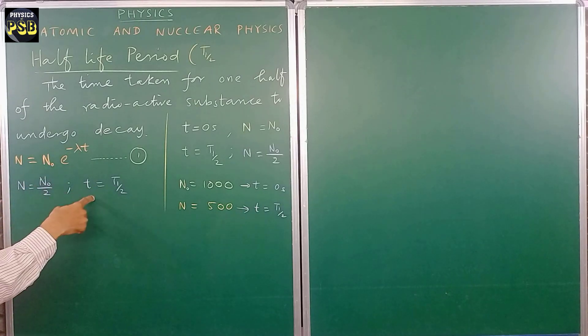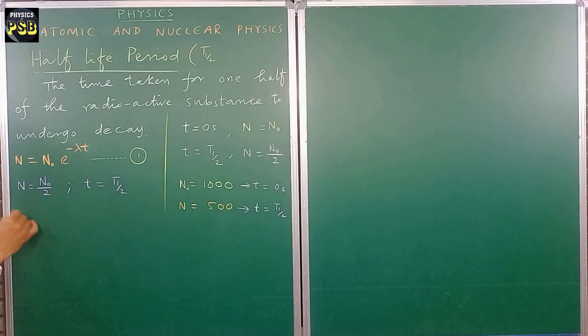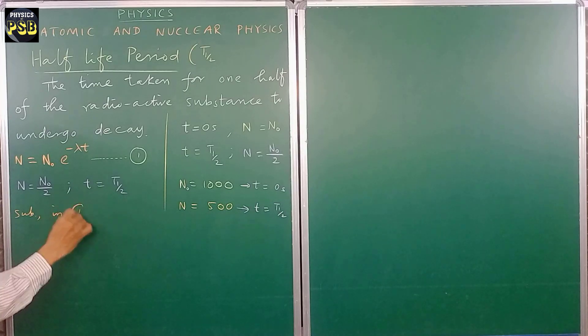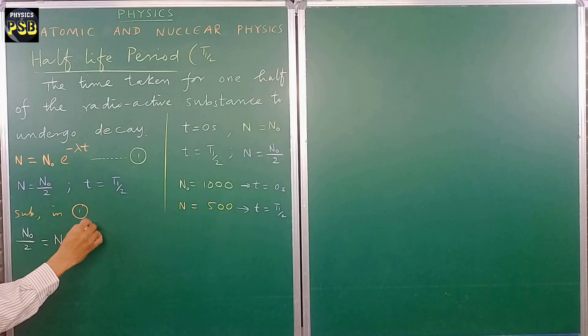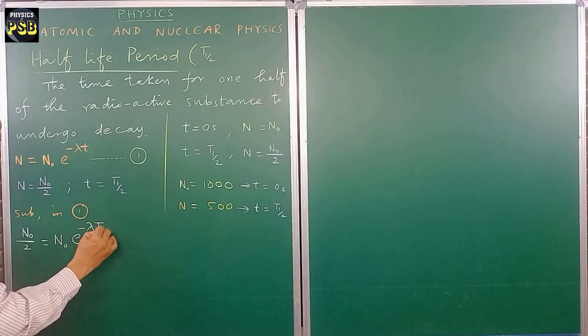I am going to use this value in equation number one. Substituting in equation one, so what I get if you do so, in place of N I write N naught divided by 2, equals N naught e to the power minus lambda, then in place of t I write t half.